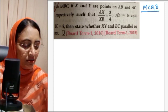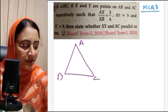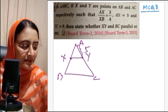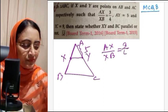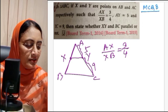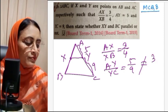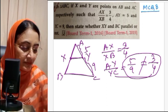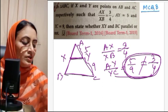Let me draw triangle ABC, where X and Y are points on AB and AC respectively. AY equals 5, YC equals 9, and AX/XB equals 3/4. So AY/YC equals 5/9, which is not equal to 3/4. This is the criteria for the lines to be parallel — the ratios must be equal.